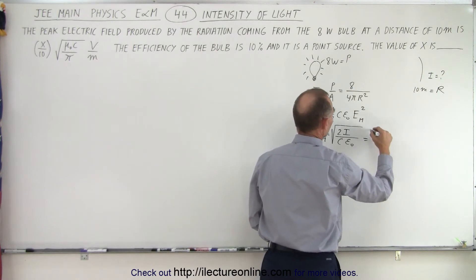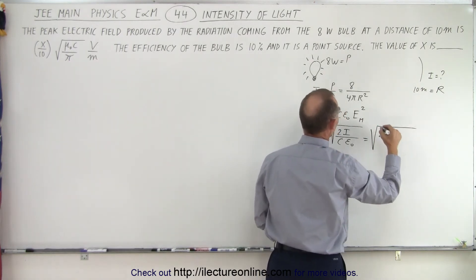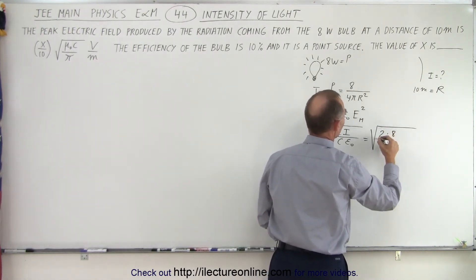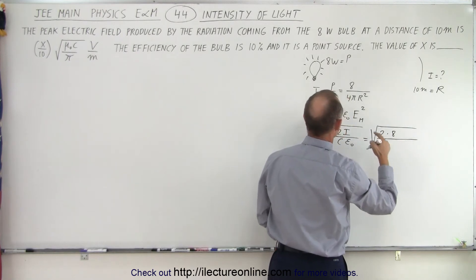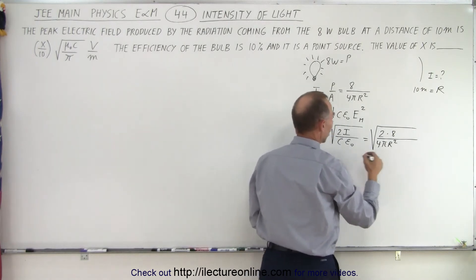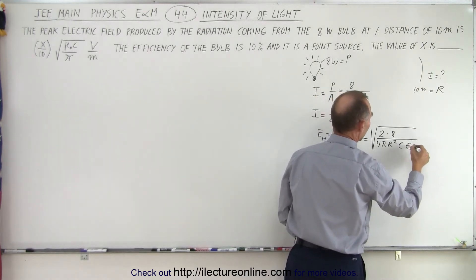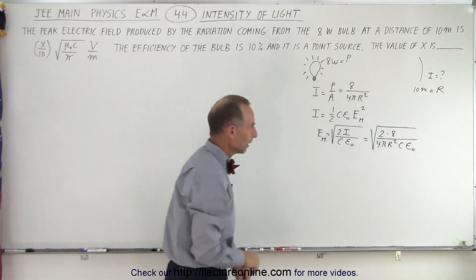So this is equal to the square root of 2 times 8 divided by 4 pi r squared, 4 pi r squared. And then we still have c times epsilon sub naught.